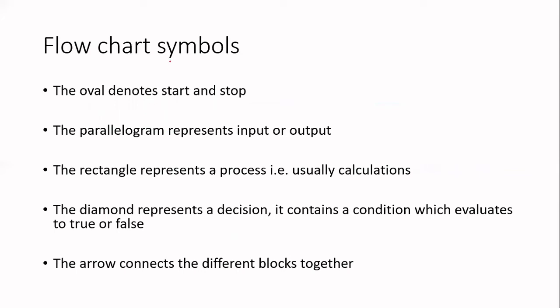What are some of the symbols that we use in a flowchart? To start off with, we use an oval. So you have an oval and this denotes the start and it also denotes the stop of the algorithm.